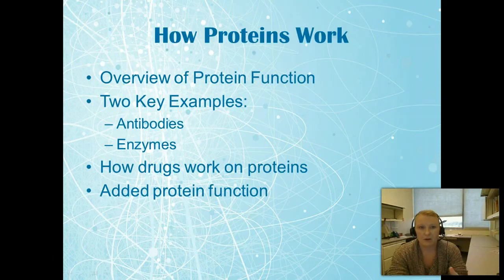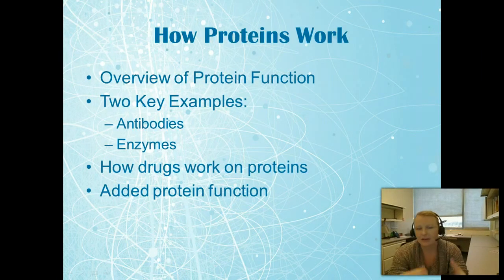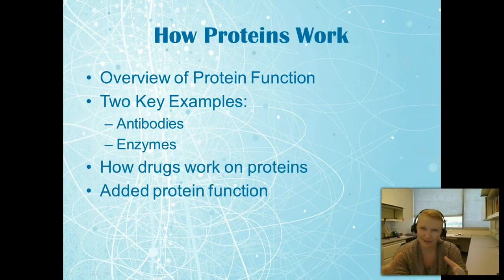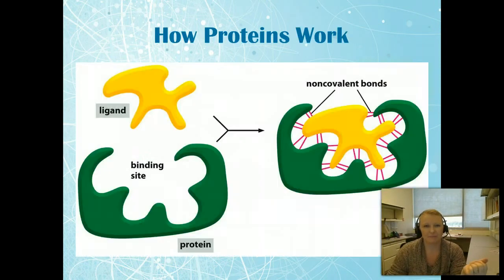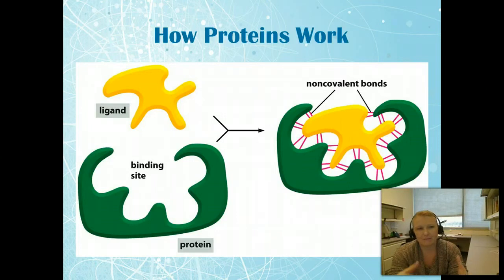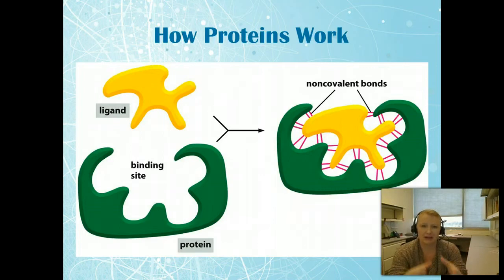First we're going to talk about how proteins work, covering an overview of how proteins function and two key examples: antibodies and enzymes. We'll also talk a little about how drugs work on proteins and some added protein function that comes with that. At the most basic level, proteins function with a ligand in a binding pocket on the protein, as you can see here.